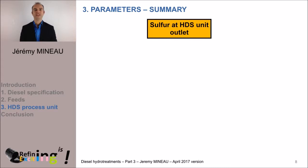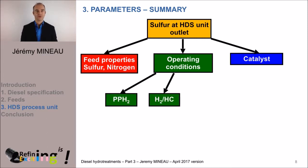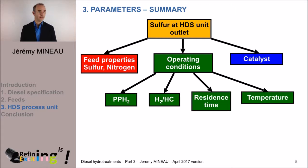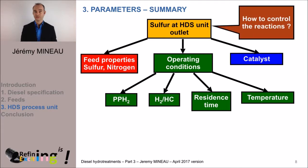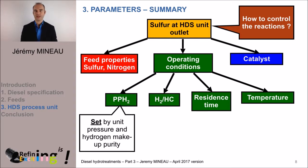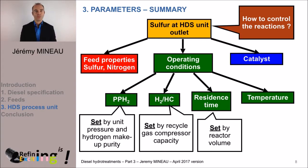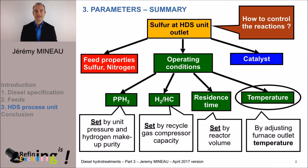The sulfur content in the product out of an HTS unit is dictated by the properties of the feed, the operating conditions, and the catalyst. The operating parameters are: the hydrogen partial pressure, the recycle gas rate, the residence time, and the temperature. In operation, the hydrogen partial pressure is set by the total pressure within the unit and the hydrogen purity in the recycle gas. The recycle gas rate is set by the capacity of the recycle gas compressor. The residence time is set by the quantity of catalyst, provided we do not change the feed throughput. So, the reaction is primarily controlled by the temperature of the reactor, by adjusting the temperature at the heater outlet.